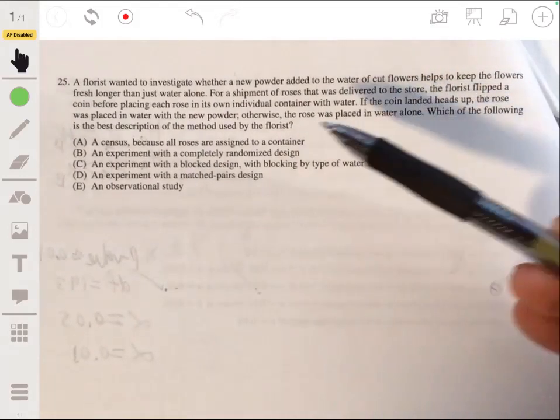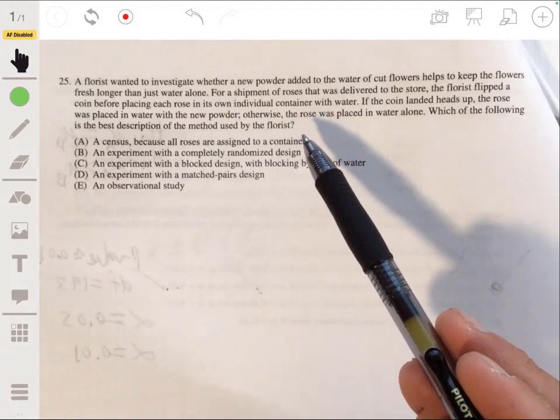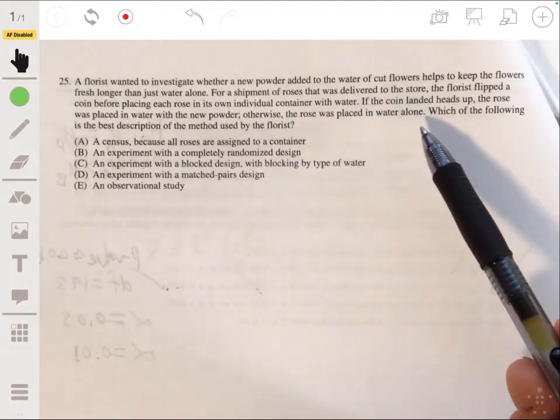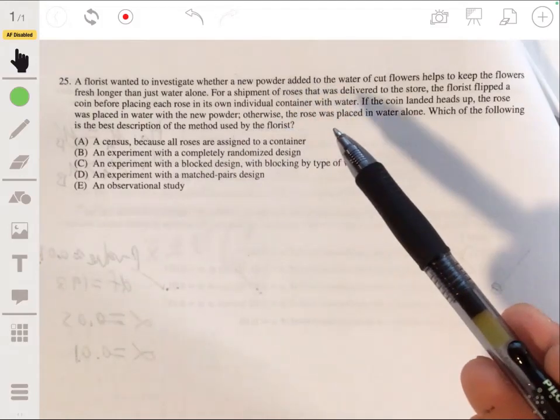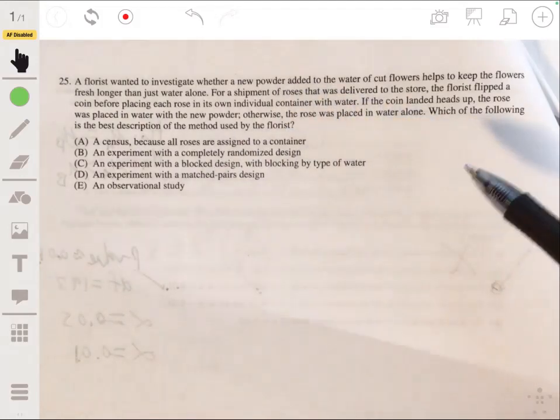the florist flipped a coin before placing each rose in an individual container with water. And if the coin landed heads up, the rose was placed in water with the new powder. Otherwise the rose was placed in water alone. So which of the following is the best description of the method used by the florist?